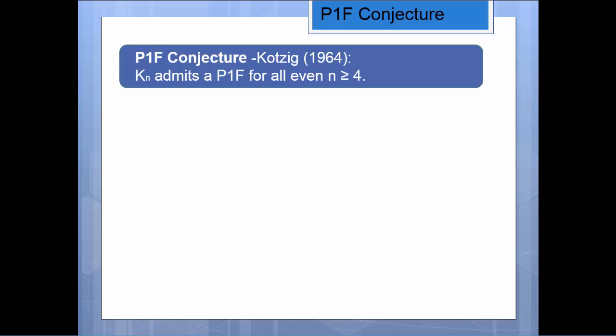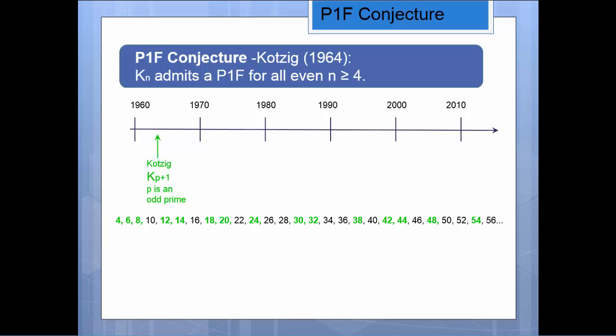So this all sounds fun. We can find perfect one factorizations for K6 and for K10. In fact, in 1964, Kotzig decided to make a conjecture. He's basically guessing that the complete graph of even order for all orders bigger than or equal to 4 will have a perfect one factorization. He didn't just guess it randomly. He guessed this in 1964 after showing that this complete graph of order n, where n is equal to p a prime plus one, that that will always have a perfect one factorization. If we look at all of the even numbers from 4 up until 56, and we highlight in green the values for which we know that the value is one more than an odd prime, that's this infinite family that Kotzig found.